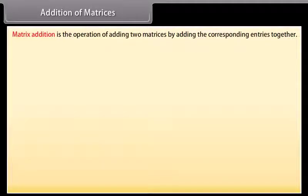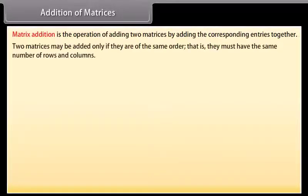Matrix addition is the operation of adding two matrices by adding the corresponding entries together. Two matrices may be added only if they are of the same order — that is, they must have the same number of rows and columns.